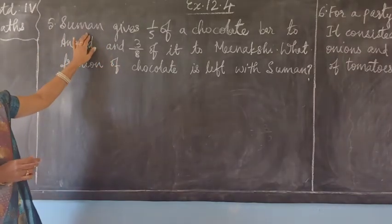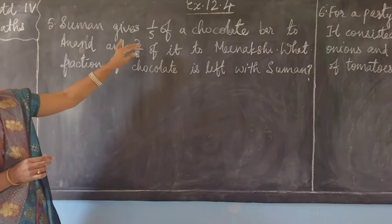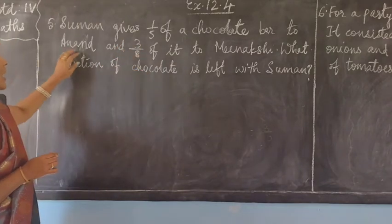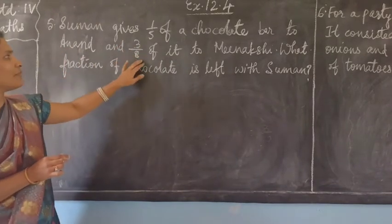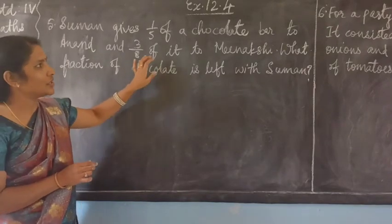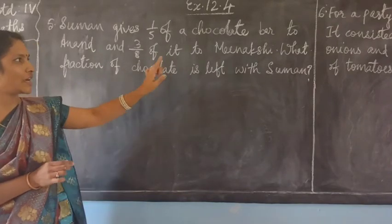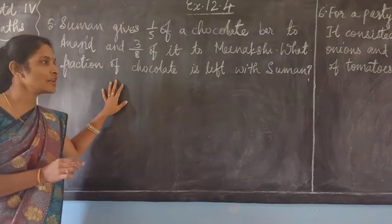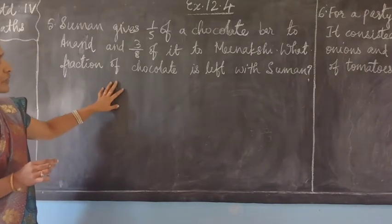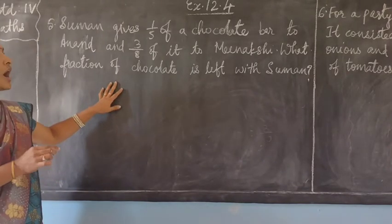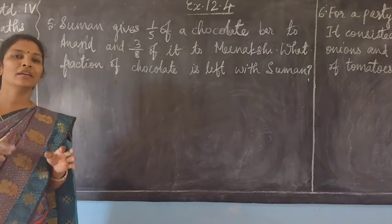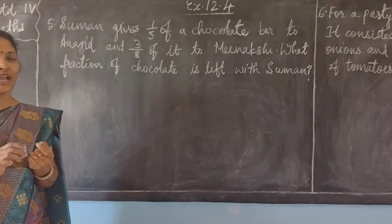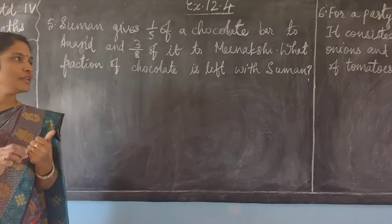So it gives 1/5 of a chocolate bar to Anandam and 3/8 of it to Meenakshi. One fraction of chocolate is left with Suman. How much chocolate did Suman have? He had only one chocolate.